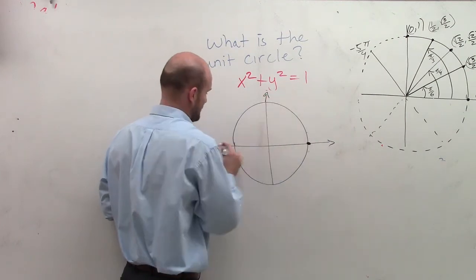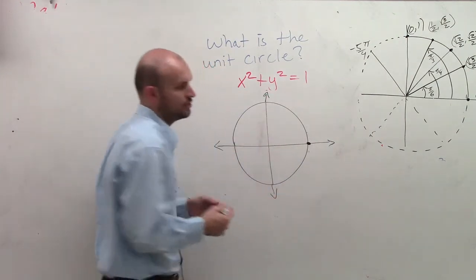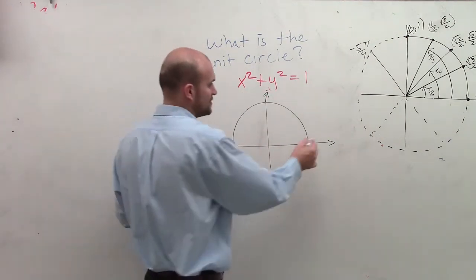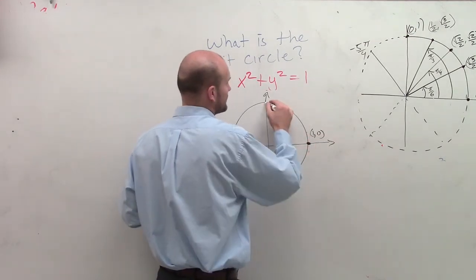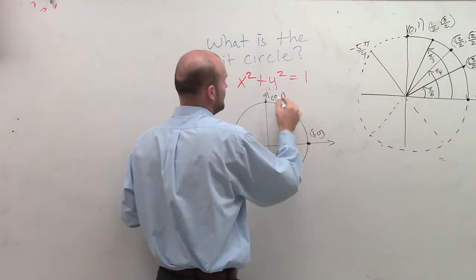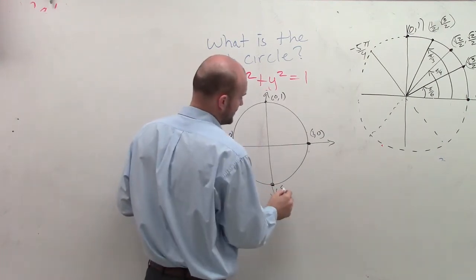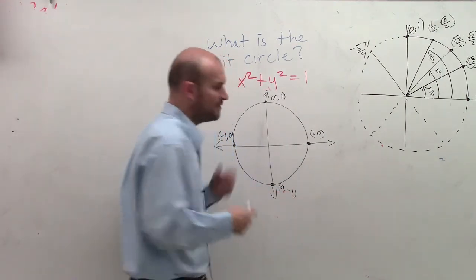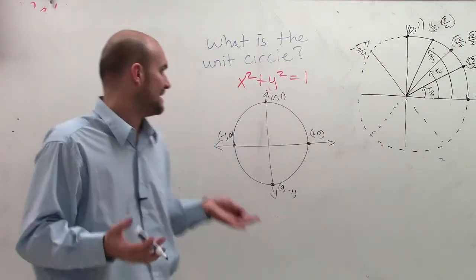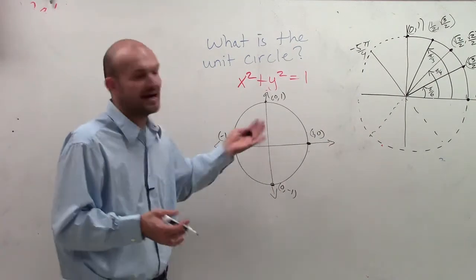Therefore, there's a couple coordinates that we can draw off our unit circle that we already know of. So first coordinate is going to be 1 comma 0. Here we could write 0 comma 1, negative 1 comma 0, and then here we got 0 comma negative 1. And those are pretty much the most basic and easiest values to find on your unit circle.